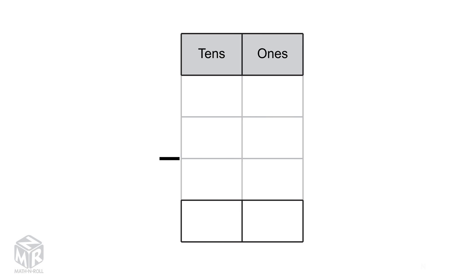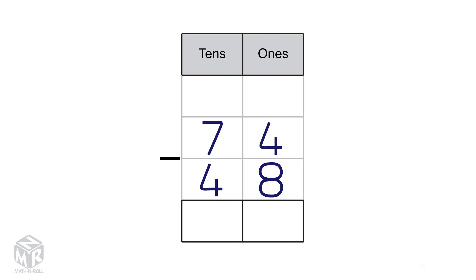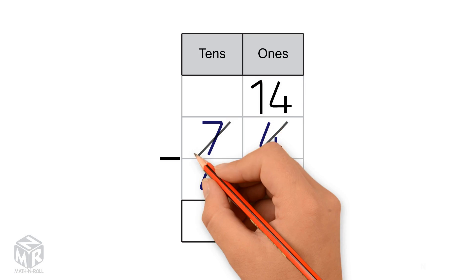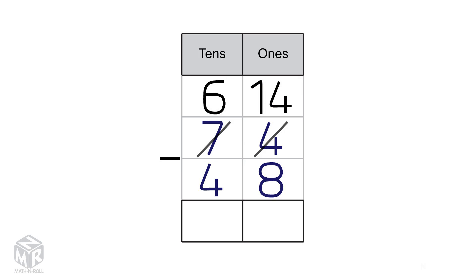Let's try another example: 74 minus 48. Pause this video and try to solve it on your own. We can't subtract 8 from 4, so we regroup one 10 as 10 1s. Now we have 14 1s and 6 10s. Next, we subtract the 1s: 14 minus 8 equals 6.